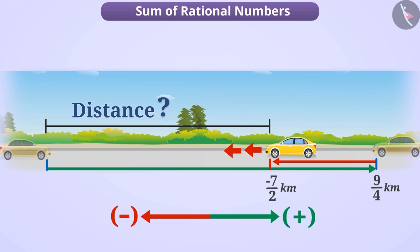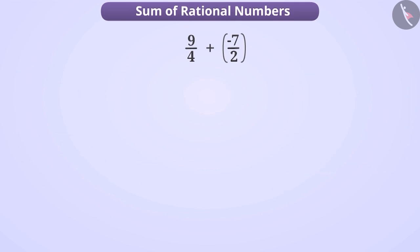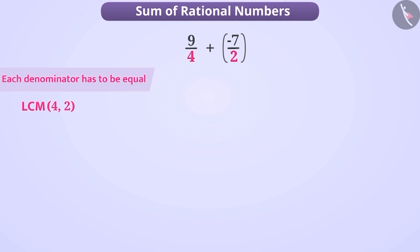Here also we have to add distances in both cases, which will be expressed by the operation 9 by 4 plus minus 7 by 2. We will be able to add these two rational numbers only when each of their denominators is equal. To make the denominators equal, we find the LCM of the denominators of both rational numbers. Here the LCM of 4 and 2 is 4.